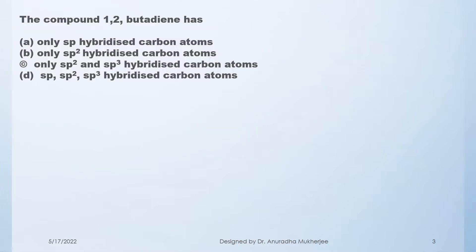The next question is: the compound 1,2-butadiene has — option A, only sp hybridized carbon atoms; option B, only sp2 hybridized carbon atoms; option C, only sp2 and sp3 hybridized carbon atoms; and option D, sp, sp2, and sp3 hybridized carbon atoms.